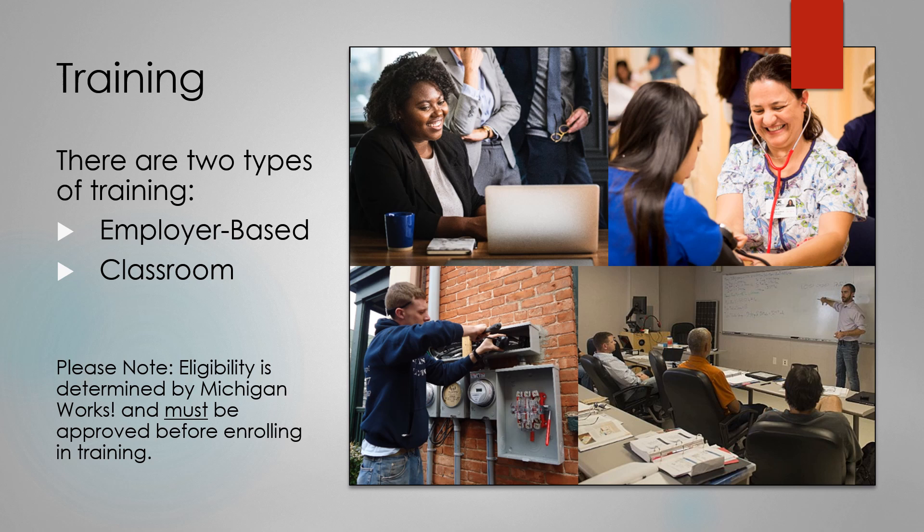The allowable types of training in TAA are classroom training, on-the-job training, customized training, apprenticeship programs, post-secondary education, prerequisite education, and remedial education. Training may be approved on a full or part-time basis, but to receive TRA eligibility, full-time basis is required.